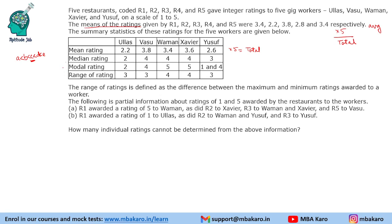Then modal rating — modal rating means highest frequency. If the ratings given are A, B, C, D and D, then D has appeared 2 times, so it has the highest frequency — whichever appears the maximum number of times. For Yusuf, 1 and 4 appear the maximum number of times; for Vasu, 4 appears the maximum number of times. Range of rating is basically maximum minus minimum.